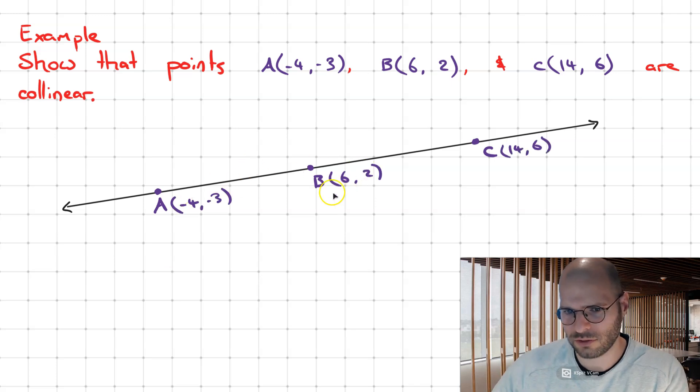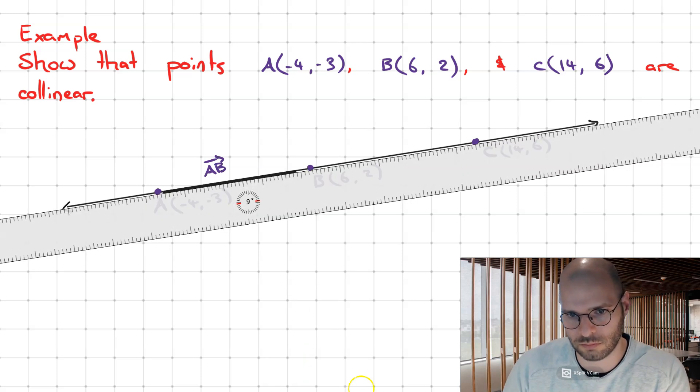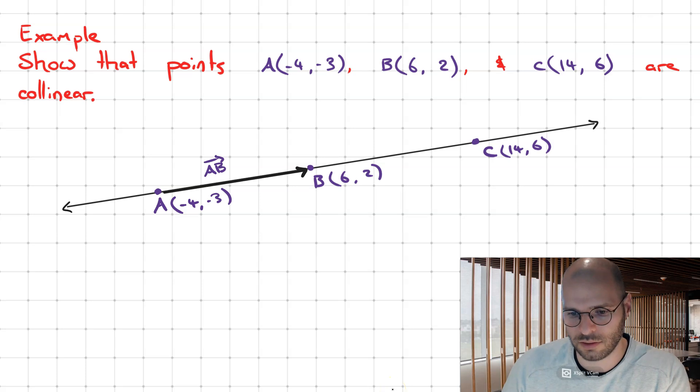Now if you observe this relationship a bit closer, suppose that we did the position vector between A and B, then we're going to find that we get the vector that looks like that. Similarly, for B and C, we get a vector that looks like this.